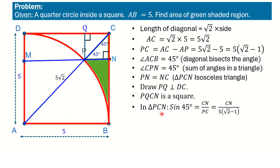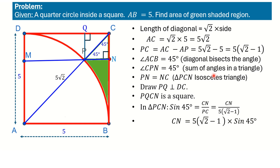In triangle PCN, we apply trigonometry. Sin 45° equals CN divided by hypotenuse PC. We already calculated PC = 5(root 2 − 1). Cross-multiplying, CN = sin 45° × 5(root 2 − 1). Since sin 45° = 1/root 2, we get CN = 5(root 2 − 1)/root 2. Multiplying numerator and denominator by root 2 gives CN = 5(2 − root 2)/2.